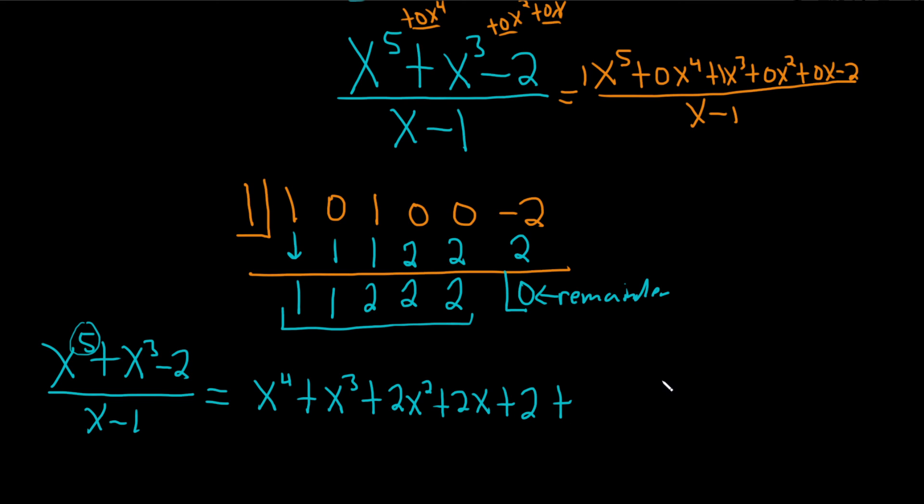plus the remainder, which is 0, over the divisor, which is x minus 1. This is called the quotient right here. This is called your quotient. The answer is always quotient plus remainder over divisor. I hope this video has been helpful.